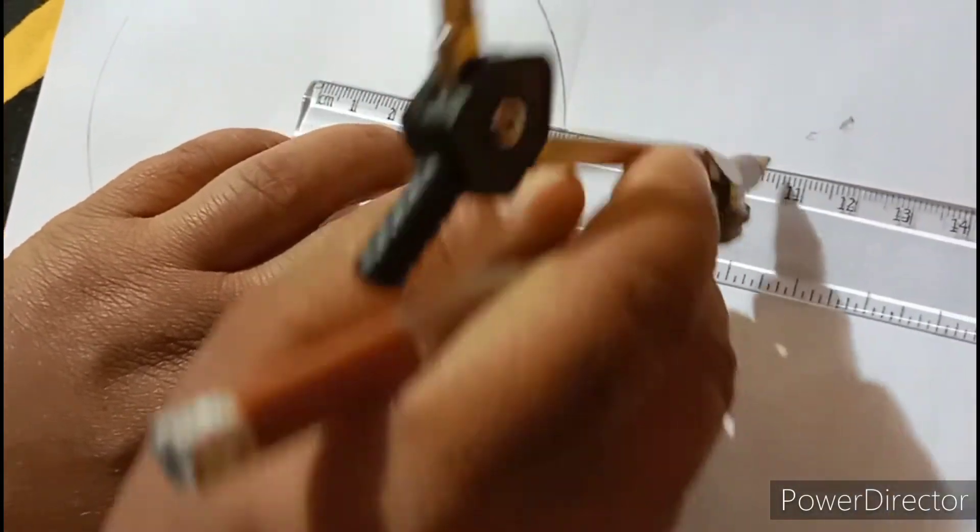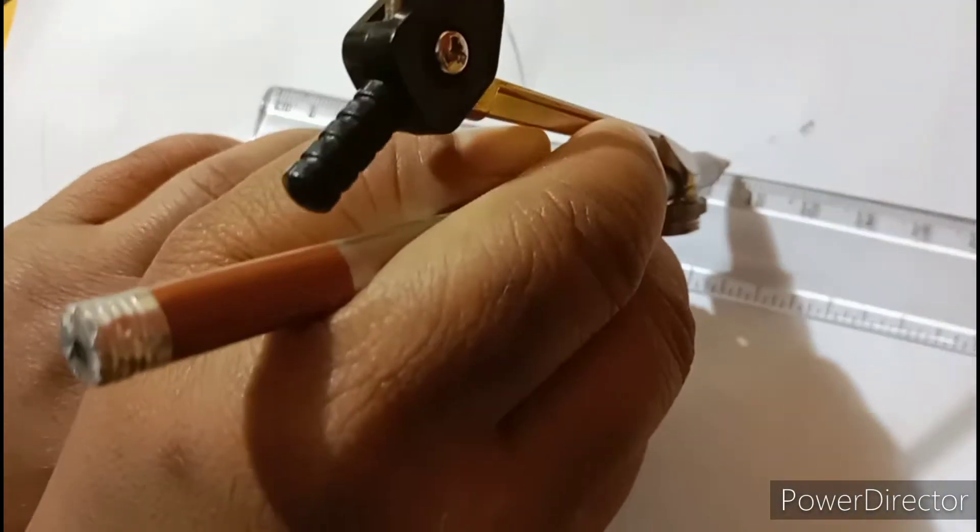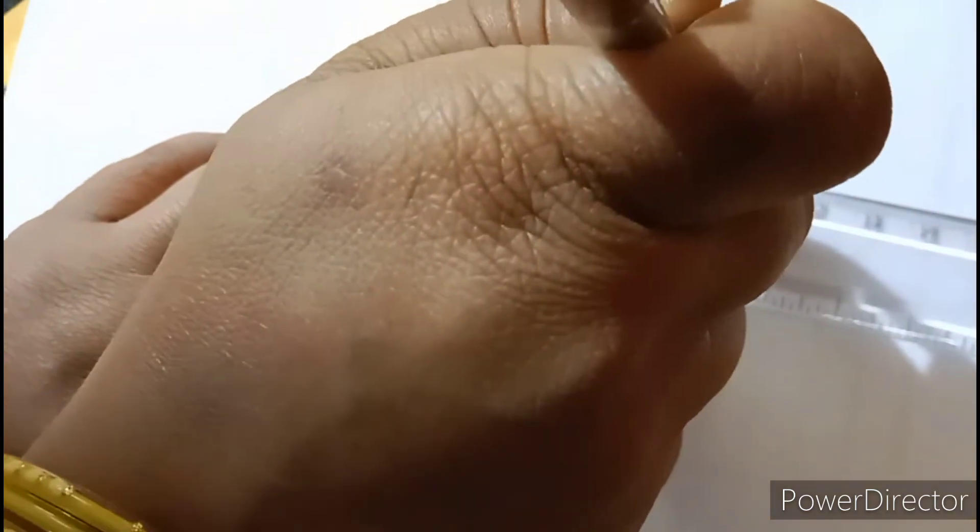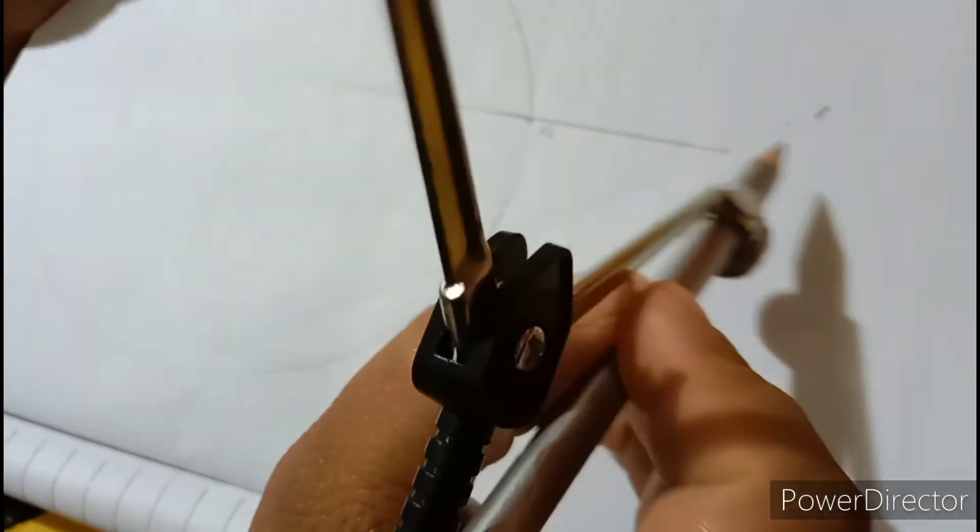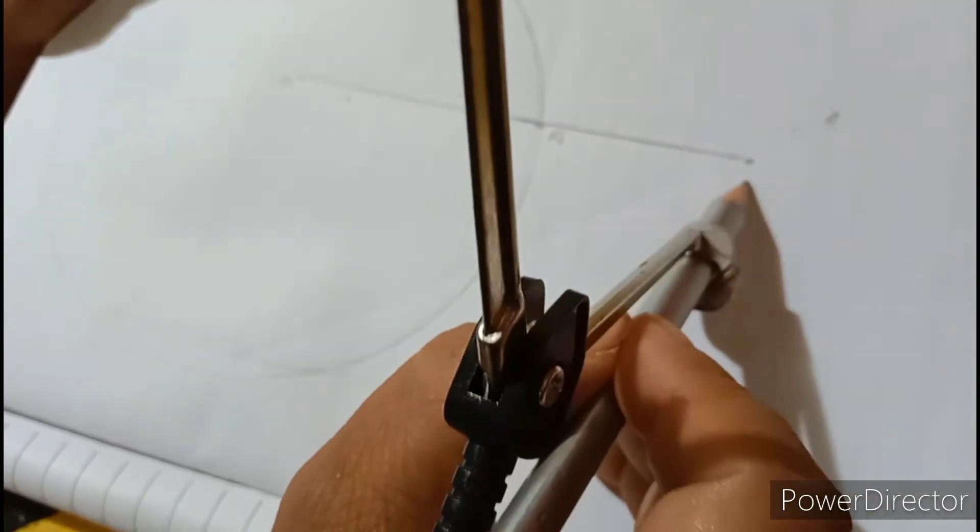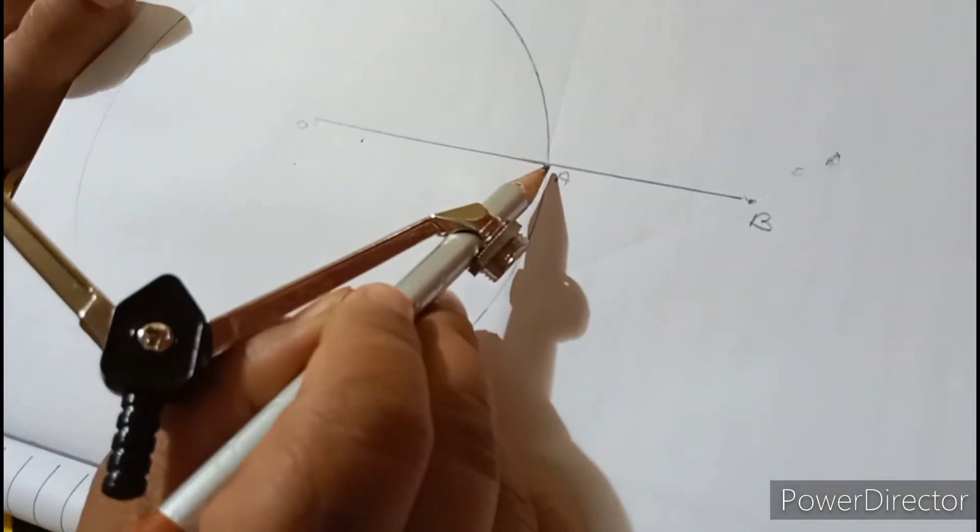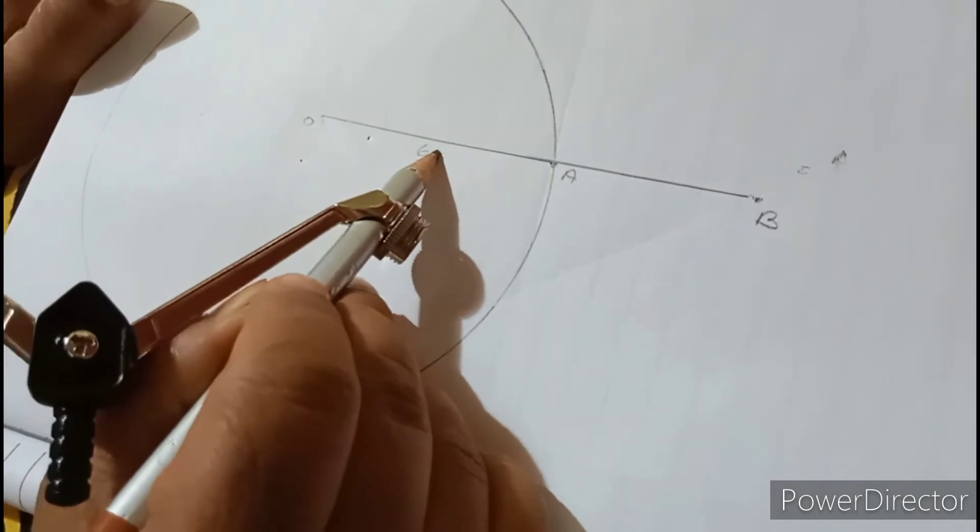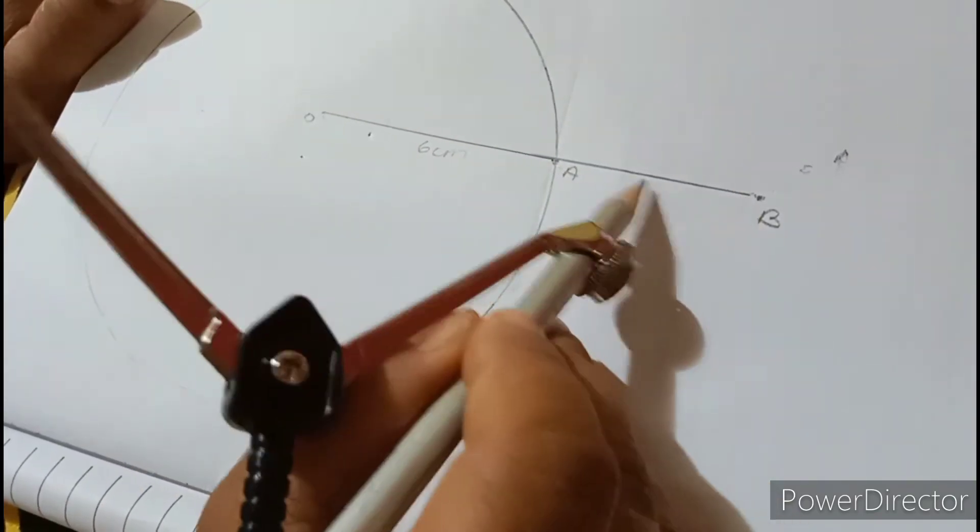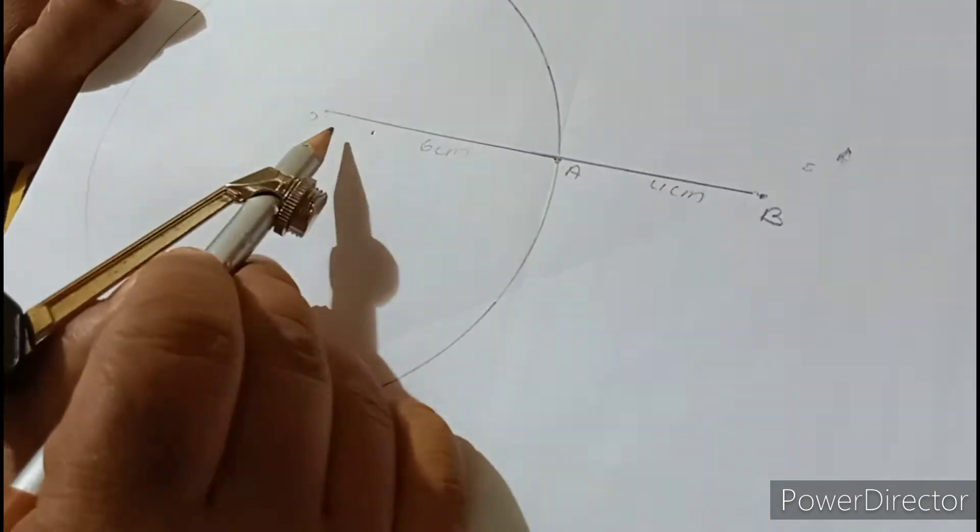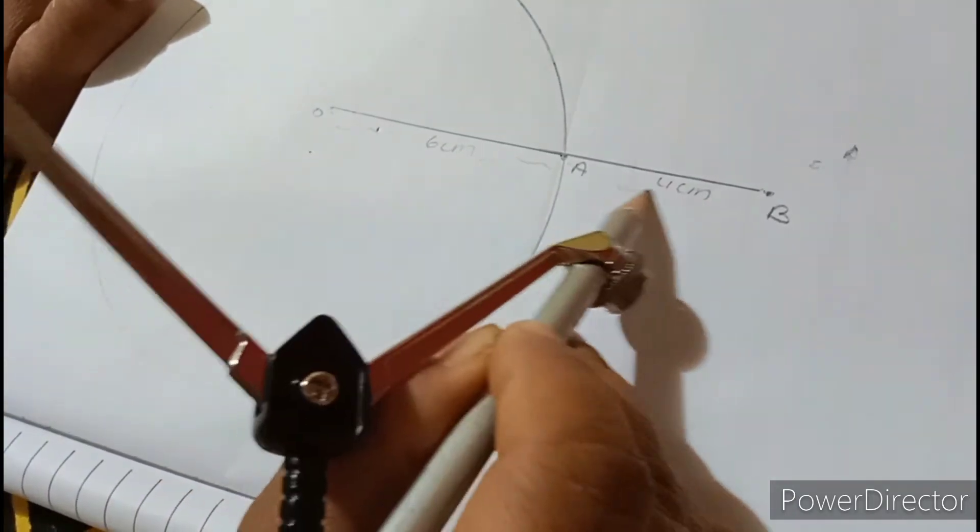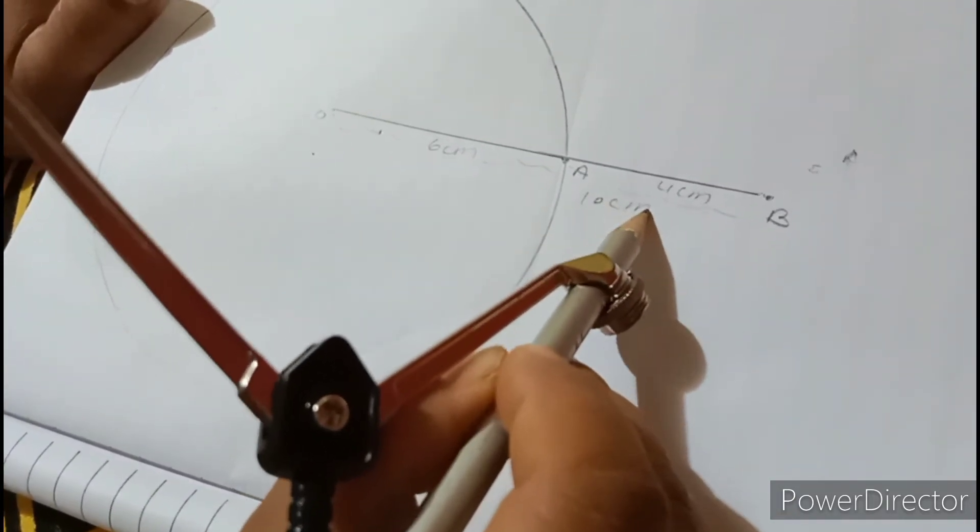1, 2, 3, 4. Now, this is your 10 cm. This is something you can give at B. A and B. O, center O to A is 6 cm. From A to B, it is 4 cm. And this complete line is your 10 cm. Clear?